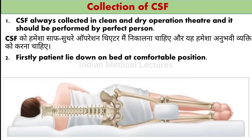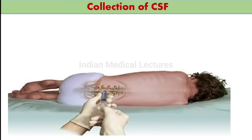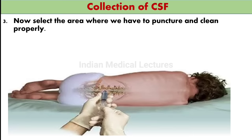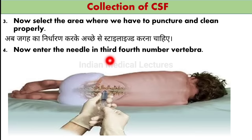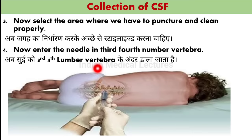First, the patient is placed lying down in a comfortable position on their side. Then, select the area where we have to puncture and clean it properly. We insert the needle into the 3rd–4th lumbar vertebra. The needle is inserted between L3 and L4 in the center area, at 180 degrees.